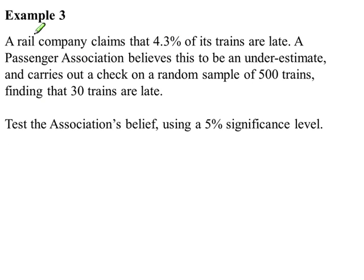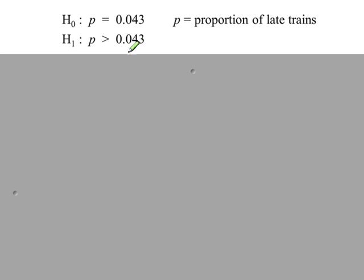Example 3. The railway company here is claiming that 4.3% of its trains are late. So that's the value that goes into H0 and H1, 0.043. And the passenger association is saying that this is an underestimate. They're saying this is too low. It should be higher. So we should be testing for greater than this value for H1. So H0, H1.